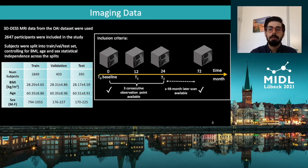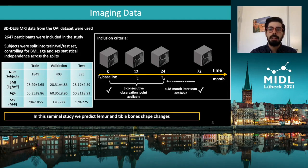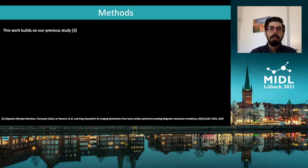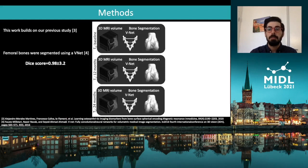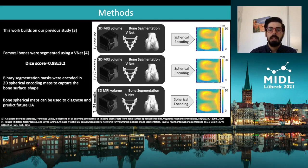In this study, we predicted changes in the femoral and tibial bone shape 48 months from the last observed time point. This study builds on our previous work in which bones of the knee joint were accurately segmented using a deep learning approach. Following the segmentation, the binary masks were encoded in 2D spherical maps, which in the same study have proven powerful in diagnosing and predicting future OA.